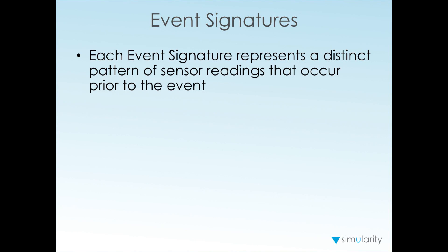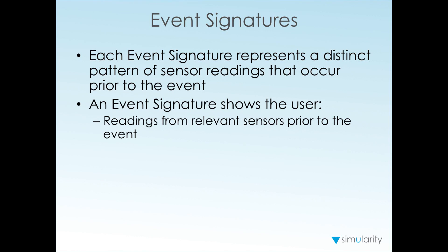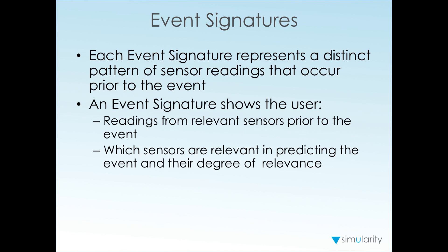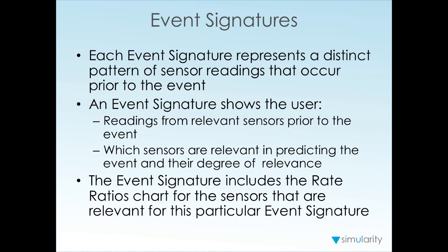An event signature represents a distinct pattern of sensor readings that occur prior to an event. An event signature shows users the reading from the relevant sensors prior to the event. You may have many sensors, and most of those readings may not be relevant to predicting the event. It includes the rate ratios chart for the sensors that are relevant for this particular event signature to indicate the degree of relevance.